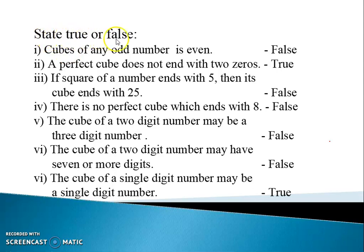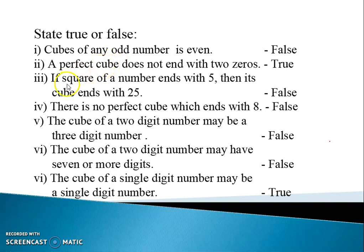State true or false. This is the last question of this exercise. First: the cube of any odd number is even — it is false, because sometimes the result is also an odd digit. A perfect cube does not end with two zeros — it is true, because a perfect cube ends with three zeros.